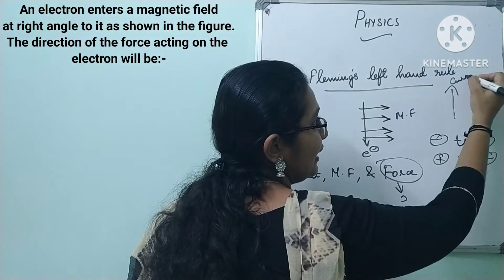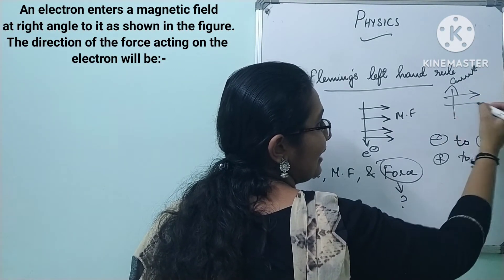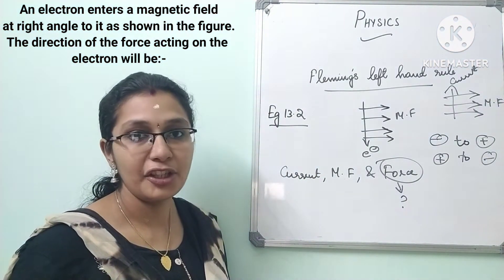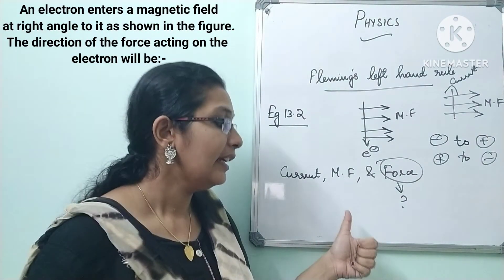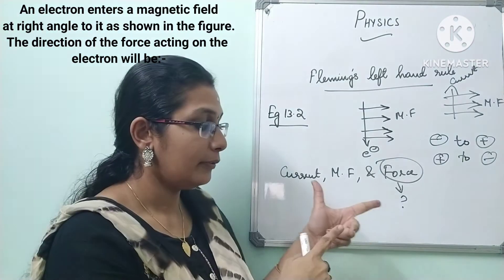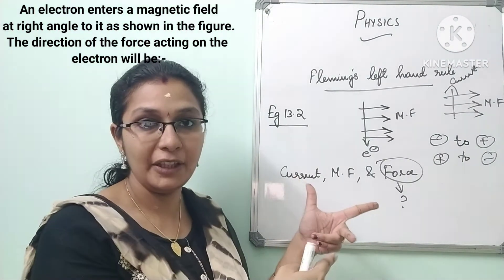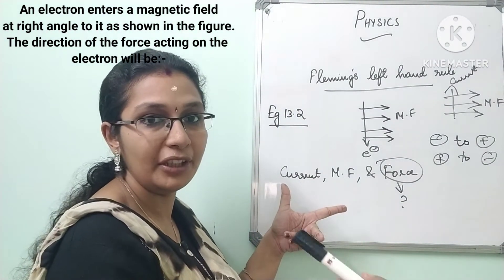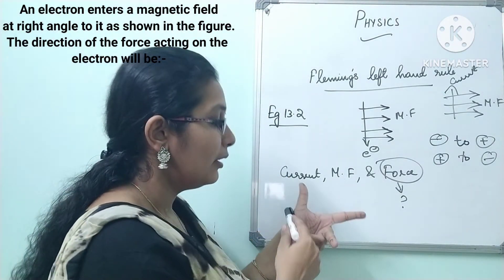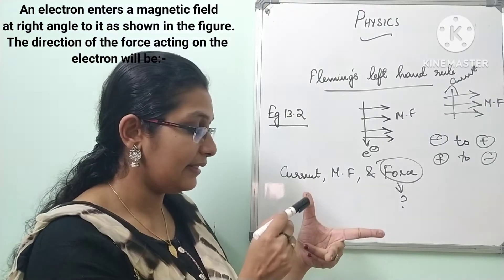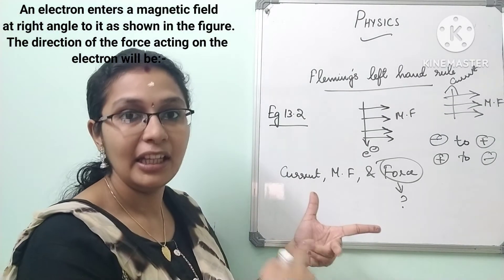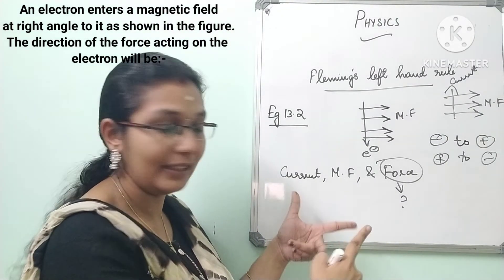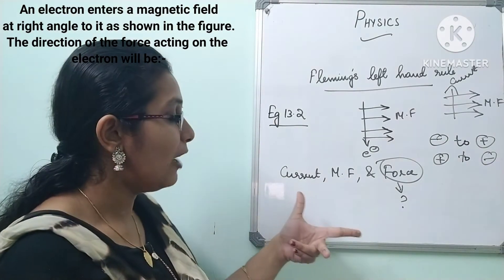The magnetic field is directly given — it is towards your right hand side. Now we have to find the direction of force. First, keep your three fingers of the left hand mutually perpendicular to each other. For convenience, I have written F, M, and C: F represents the direction of force, M represents the direction of magnetic field, and C represents current.